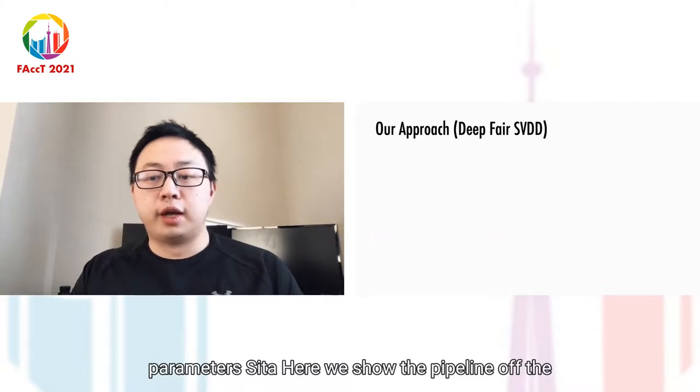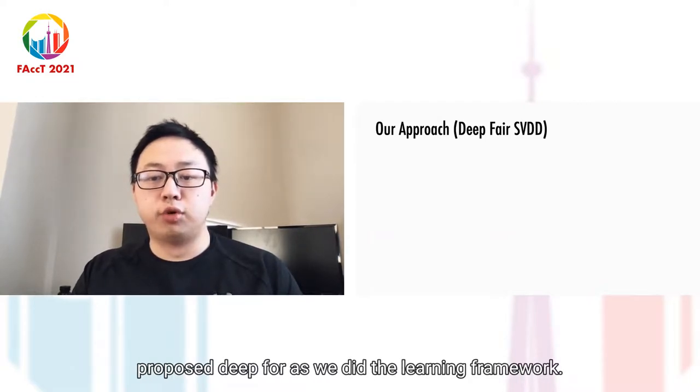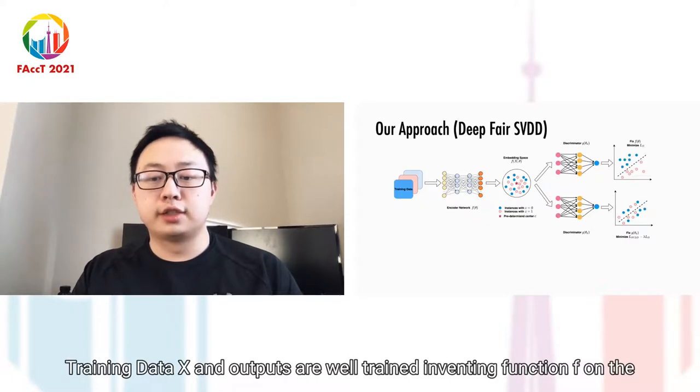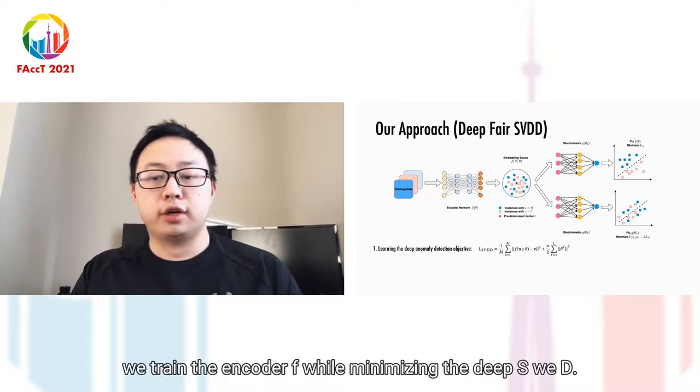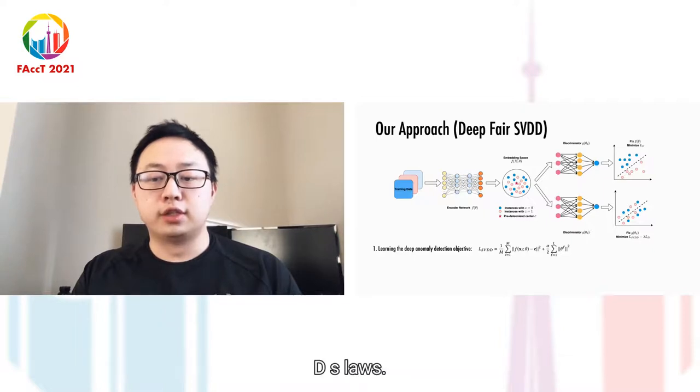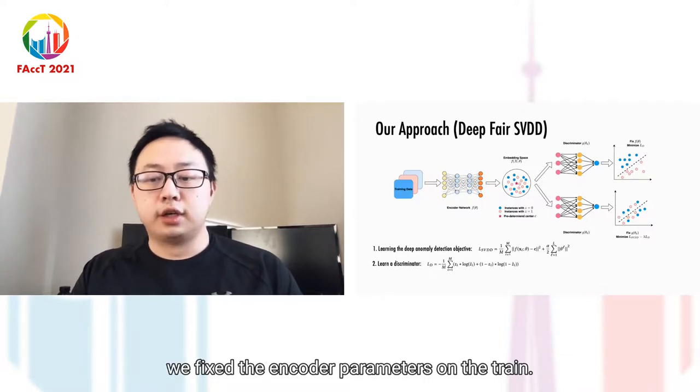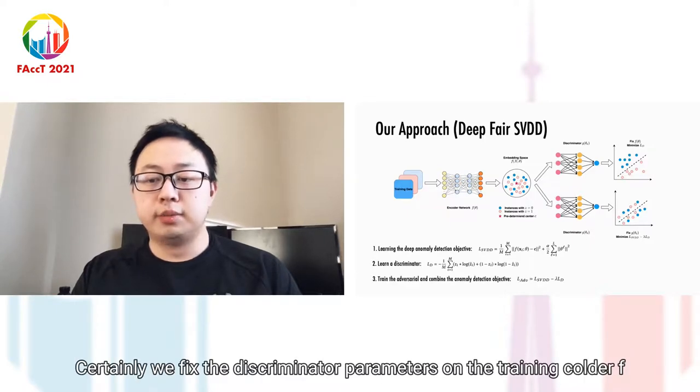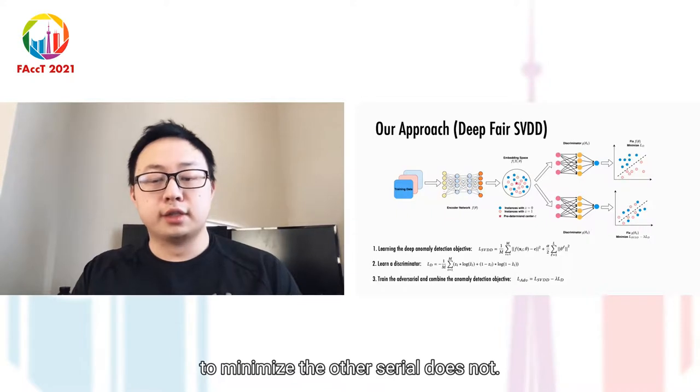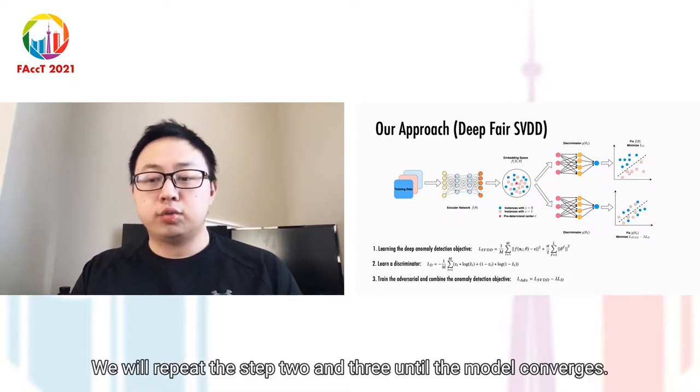Here we show the pipeline of the proposed DeepFair SVDD learning framework. The inputs are normal training data X and outputs are well-trained embedding function F and discriminator G. The end-to-end learning process contains three steps. First, we train encoder F while minimizing deep SVDD's loss. Second, we fix encoder parameters and train discriminator G while minimizing the discriminator's loss. Third, we fix the discriminator's parameters and train encoder F to minimize the adversarial loss. We repeat steps 2 and 3 until the model converges.